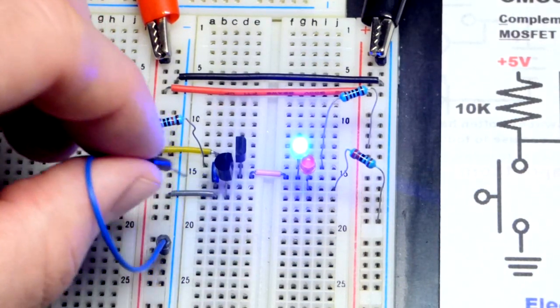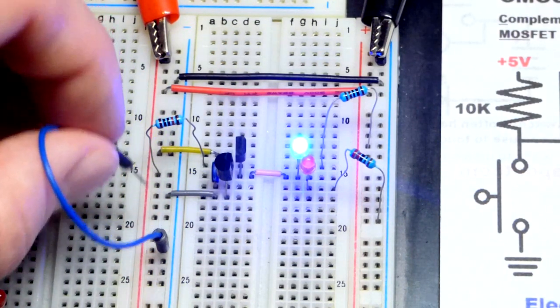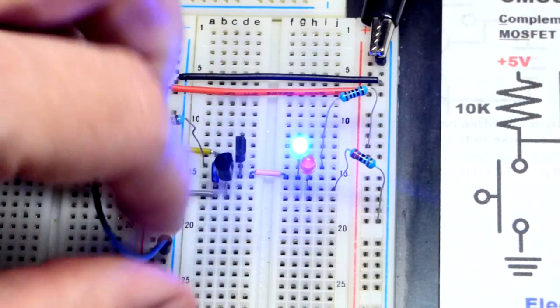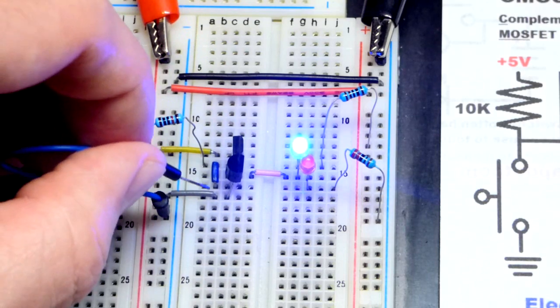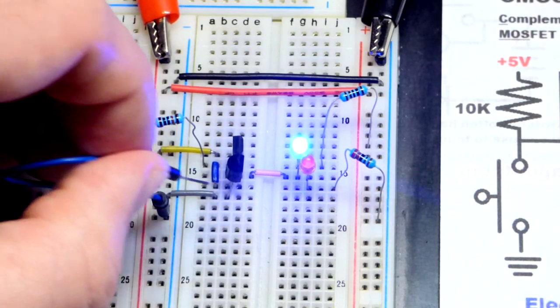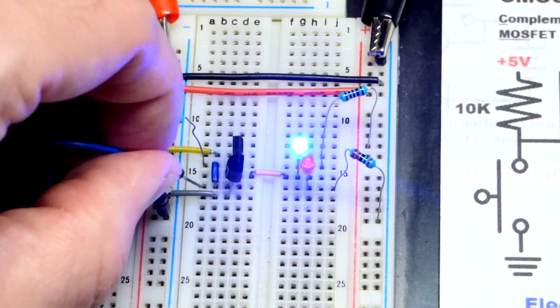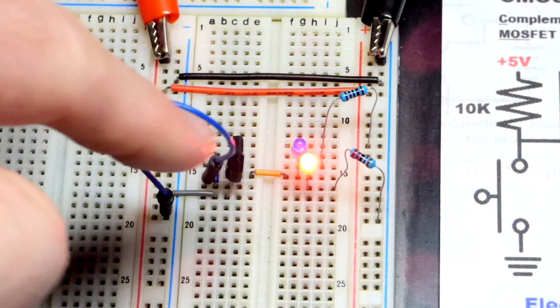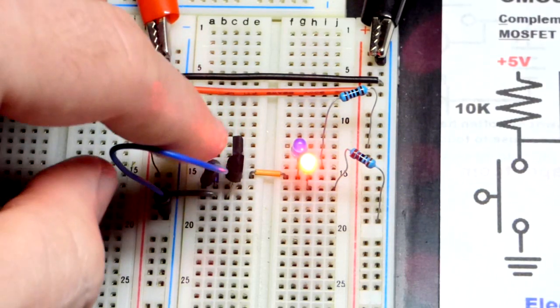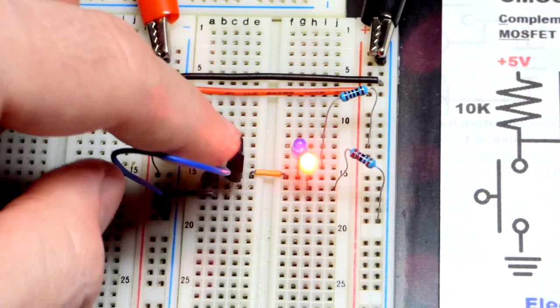So now I'm going to take this jumper, a direct connection to the negative side of the supply, just in case that's a little hard to see. There's a little jumper that makes a direct connection to that resistor and the gate of the two transistors. So now we got a low input right there.